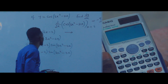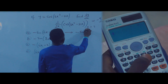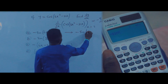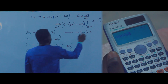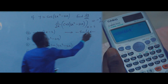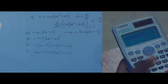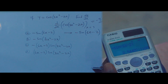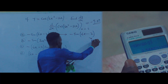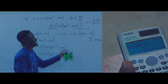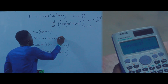Now let's go to option A. Press minus, then press sin — it will open the bracket. Press 6, then Alpha X, then minus, then 2. Close the bracket and press equals. You will observe that option A gives 0.544, which is not the same as our answer of minus 9.89. So option A is incorrect.